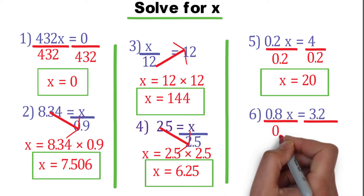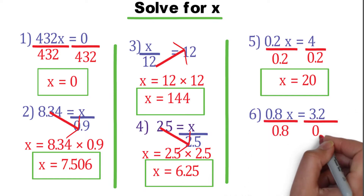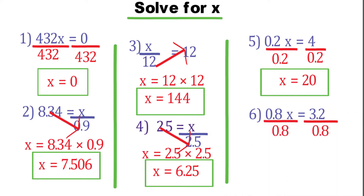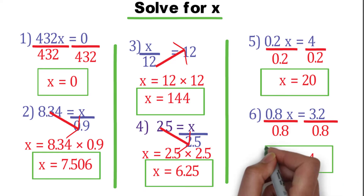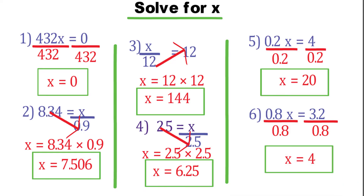Number 6: 0.8x equals 3.2. By the same way, divide both sides by 0.8. Now x equals 4. If you like my video, subscribe to my channel for more math videos. Thanks for watching — see you soon, guys!